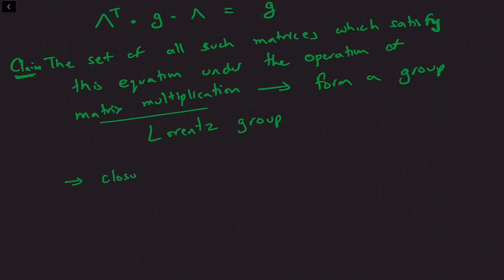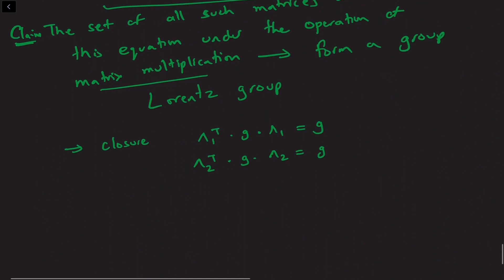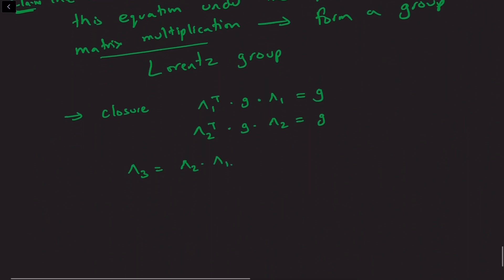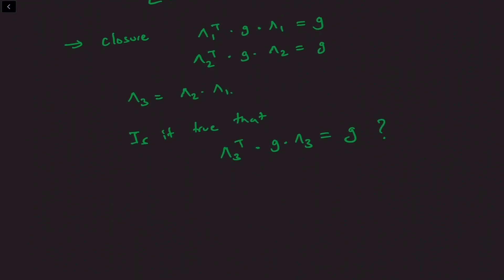The first property is the property of closure. That is, if we take two matrices lambda 1 and lambda 2 that satisfy this equation, then it should be true that their matrix product — if we consider lambda 3 — satisfies the same equation. Lambda 3 is a four by four matrix, so it at least belongs to the set of four by four matrices, but it should also additionally satisfy this property.